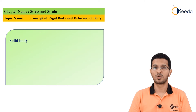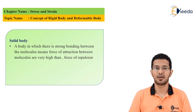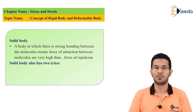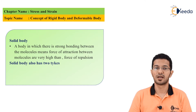Let's talk about solid body. A solid body is a body in which there is strong bonding between the molecules — that is, the forces of attraction between the molecules are very high compared to the forces of repulsion. So, a body in which the forces of attraction between the molecules are high compared to the forces of repulsion is called a solid body.